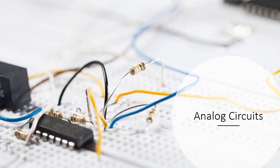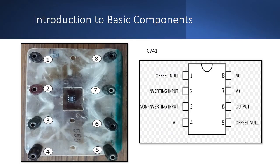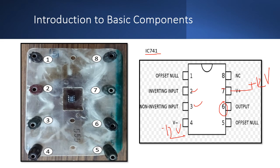Now let us discuss the fundamentals and instruments used for analog experiments. In the analog section we have two experiments: the inverting and non-inverting amplifier, and the design of an astable multivibrator. For both applications we use the IC 741, which is the op-amp IC. The supply voltages are given through pin 7 (plus VCC) and pin 4 (minus VEE) via a dual power supply — plus 12V and minus 12V. The inverting input is at pin 2, the non-inverting input is at pin 3, and the output is taken from pin 6.